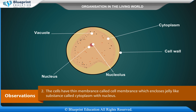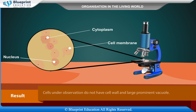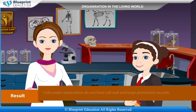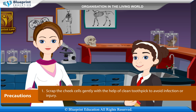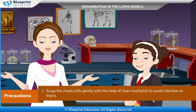The cells have a thin membrane called the cell membrane, which encloses a jelly-like substance called cytoplasm, with a nucleus. Result: The cells under observation do not have a cell wall or large prominent vacuole.